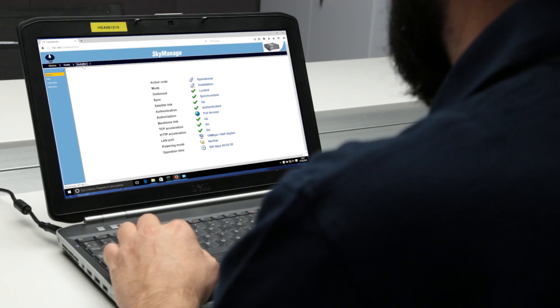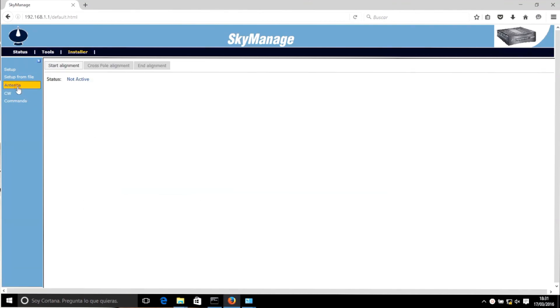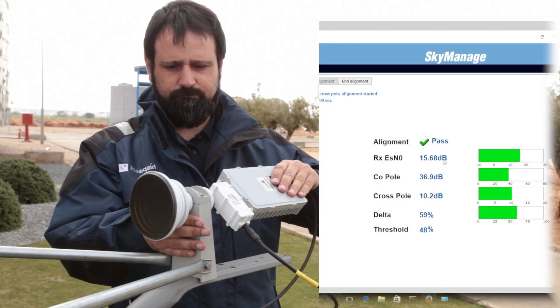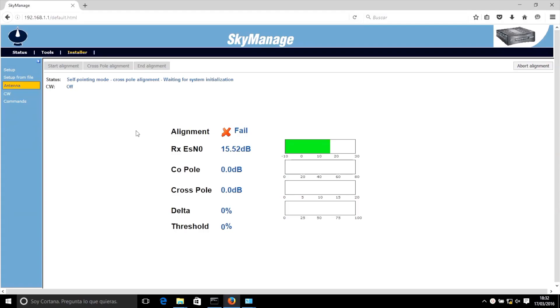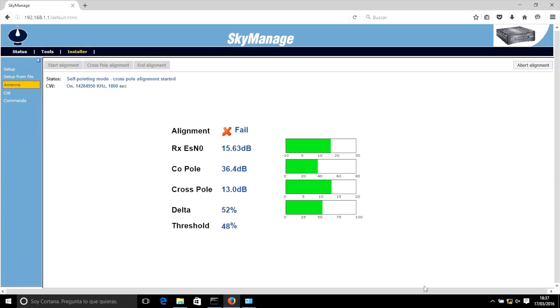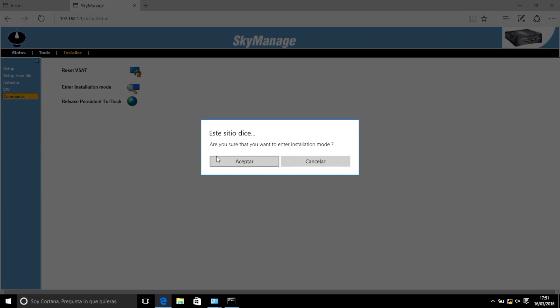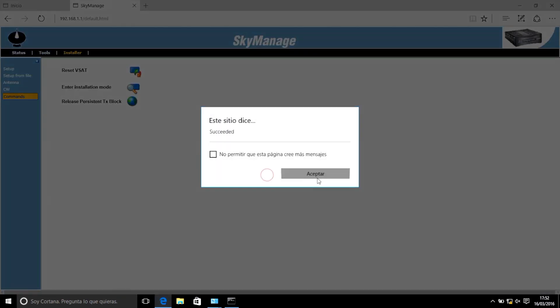Automatic alignment. The fine-tuning of the cross-polarization must be done through an automatic alignment. To initiate it, go to Installer, Antenna, and click Start Alignment, and then click Cross Pole. In order for the alignment to be valid, the value of the cross-pol must be the lowest possible. In order to do so, you will have to fine-tune the cross-polarization by rotating the BUC. Once you have obtained said value, after a few seconds, the alignment will be validated and you can finalize the process by clicking End Alignment. After this has been done, you will have to go to the Command section and click on Enter Installation Mode and then click Accept. Lastly, press Reset VSAT to save and apply the configuration.